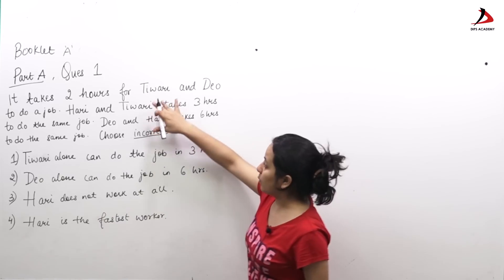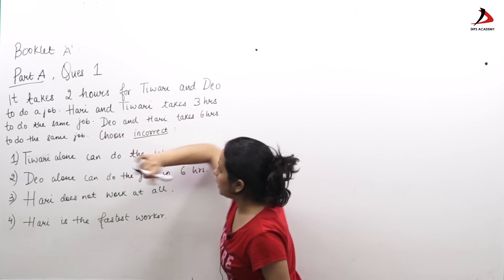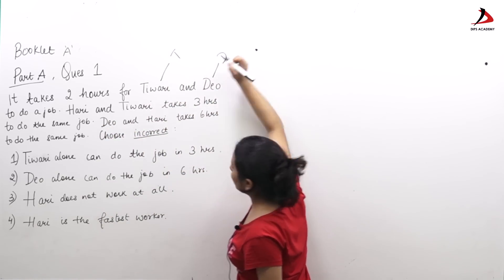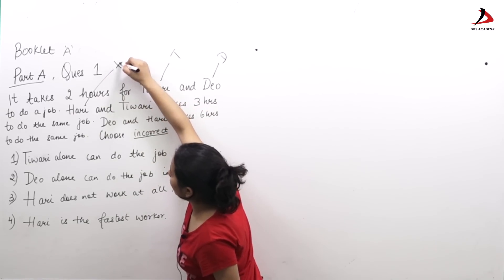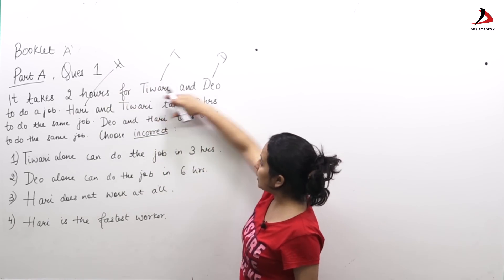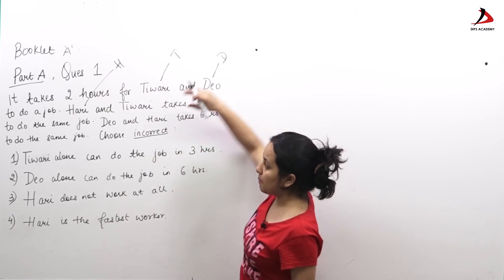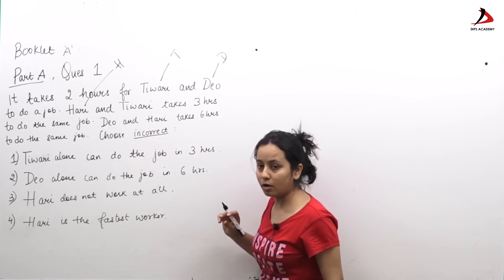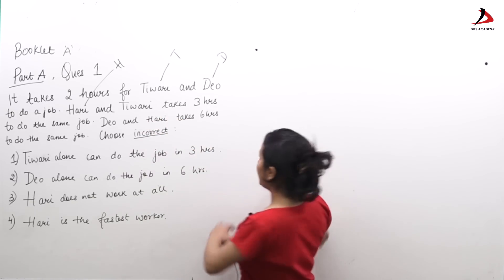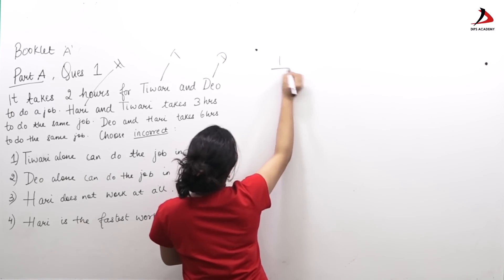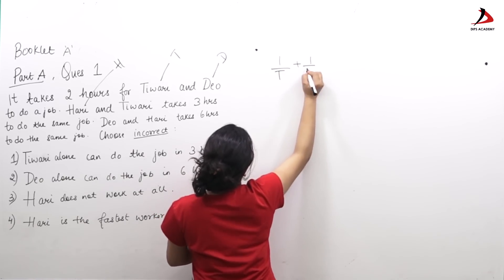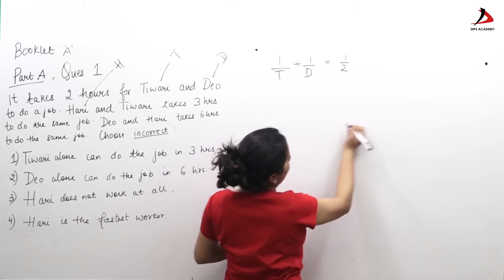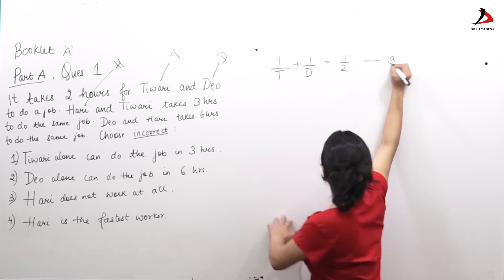I will use the notation T for Tiwari, D for Dio, and H for Hari. Since Tiwari and Dio complete the work in 2 hours, the 1-hour work of Tiwari and Dio is: 1/T + 1/D = 1/2. I will name this equation A.